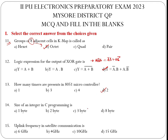How many timers are present in the AT89S51 controller? It is two timers. The size of an integer in a C program is two bytes — that is for int, one byte is for character, and eight bytes is double precision. The uplink frequency in satellite communication is 6 GHz, and 4 GHz is for downlink frequency.